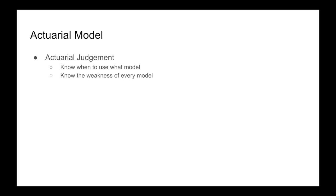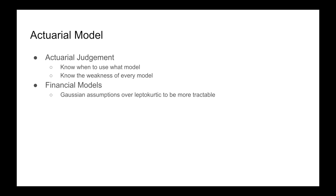When it comes to actuarial models, you always want to apply actuarial judgment, which means knowing when to use what model and being aware of the weaknesses of every model. For example, in financial models, actuaries are well aware that Gaussian assumptions are favoured over more realistic leptokurtic ones in order that the model is more tractable. And what this results in, or the weakness of financial models, is that they do tend to underestimate risk.